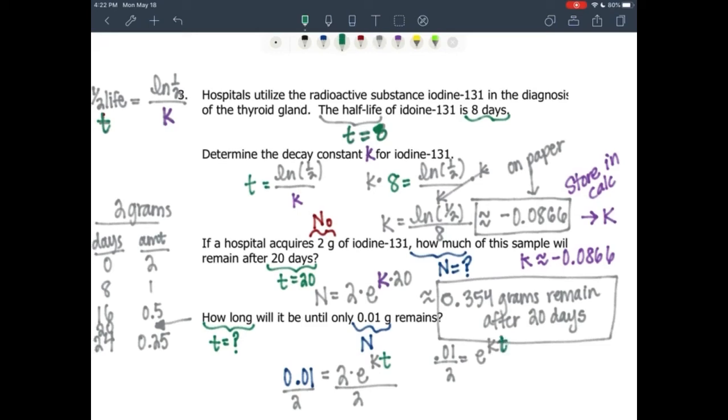I'm going to have the natural log—log base e—so the natural log of 0.01 divided by 2 is equal to k times t. To solve for t, we're going to divide both sides by k.